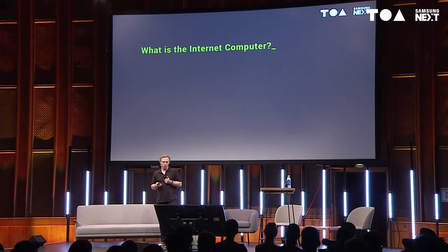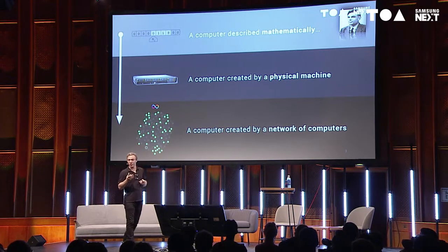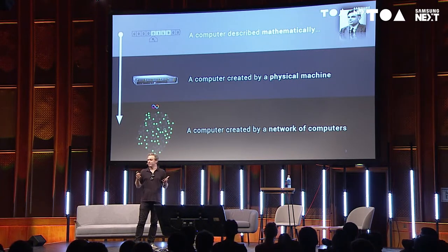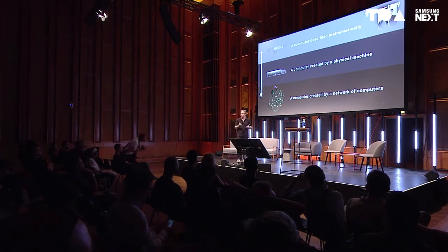So the first question we're going to address is: what is the internet computer? We'll start off thinking about what a computer really is. You can define a computer mathematically — a computer in essence is essentially a virtual thing. People like Alan Turing and Von Neumann created mathematical models describing how computers process instructions and data, and you can go from those theoretical models to a physical implementation — most of us think of physical computers like server machines, laptops, or smartphones.